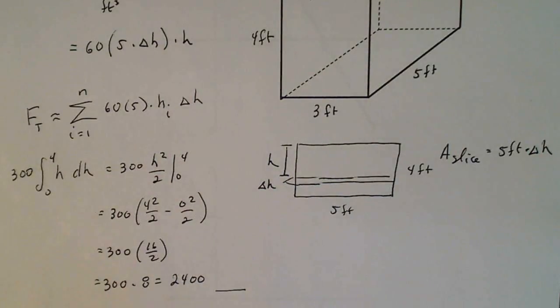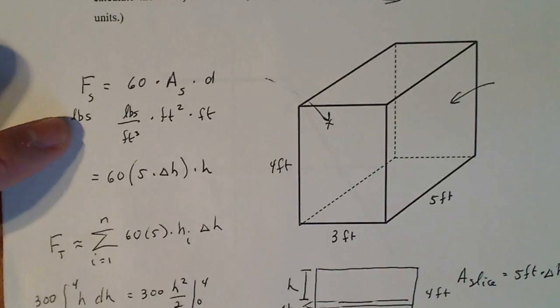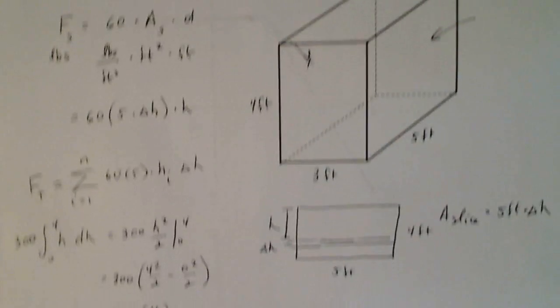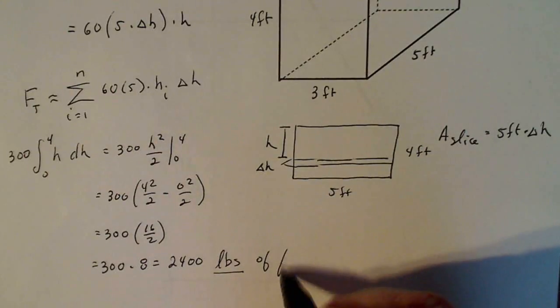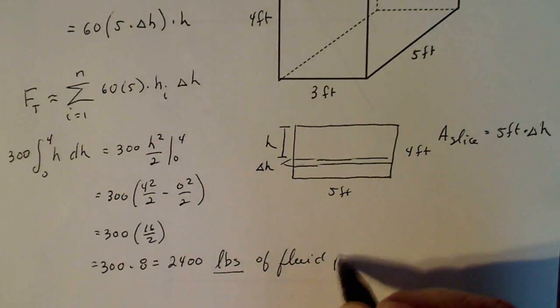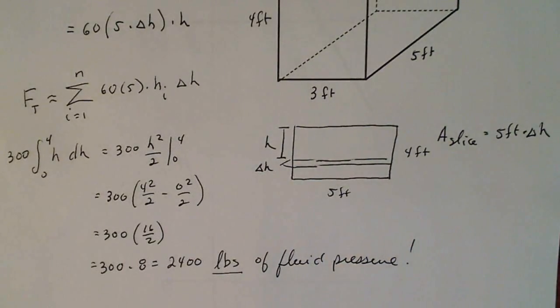Now, always in the end, write down the unit of measure that you're going to end up with. But if you structure your problem this way, you're going to know right away what your unit of measure is. And it's right there: 2,400 pounds of fluid pressure. And that's extremely exciting.